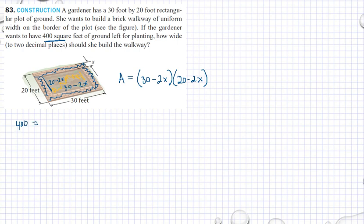Substituting the value of the area that the gardener wants, we have 400 square feet. And if we multiply now, we have 30 times 20, this gives 600 minus 60x minus 40x plus 4x squared.